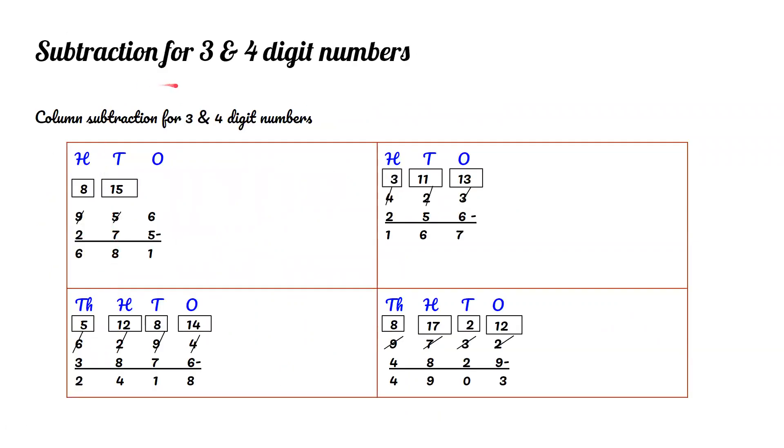Subtraction for 3 and 4 digit numbers. 956 minus 275. 6 minus 5 equals 1. Since 5 is less than the 7, we use borrowing and make the 9 an 8 and the 5 a 15. 15 minus 7 equals 8. And 8 minus 2 equals 6. So the answer is 681.